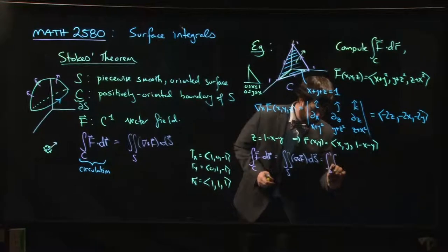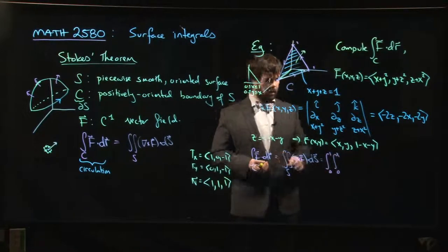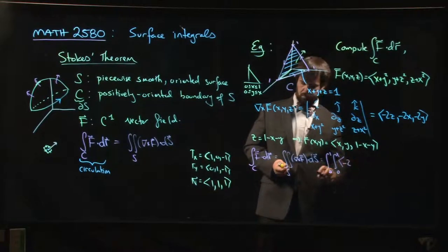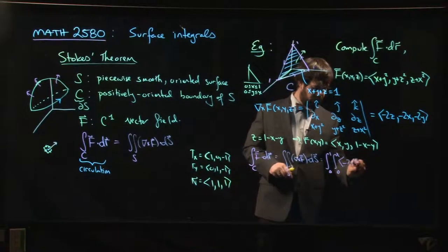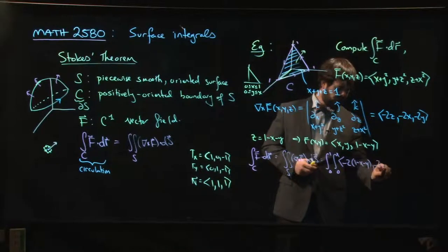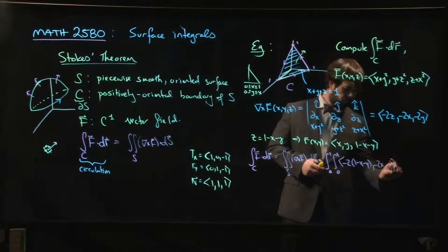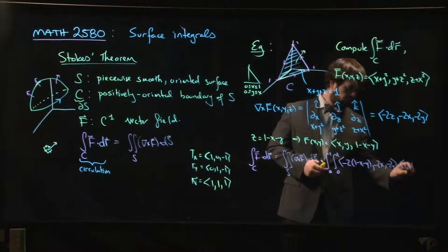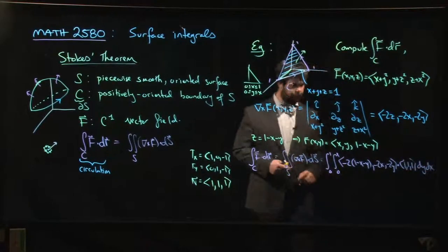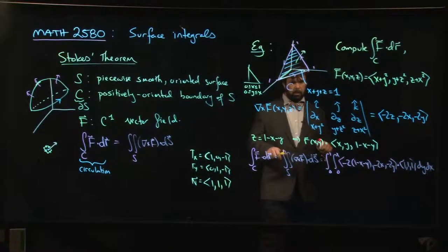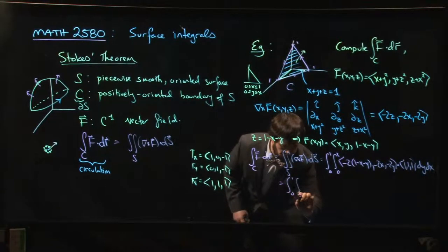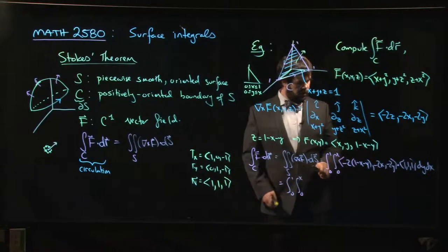So what we get is the integral from 0 to 1, from 0 to x, of our vector field: so it's -2 times z (1 - x - y), -2x, -2y, dotted with the normal (1, 1, 1) dy dx.